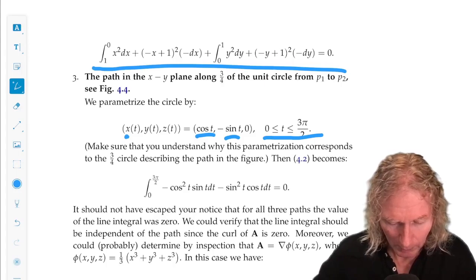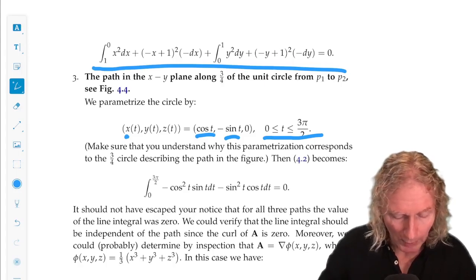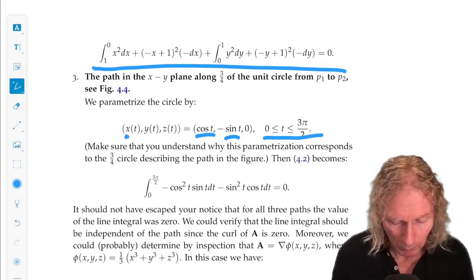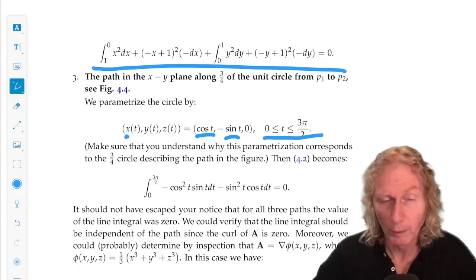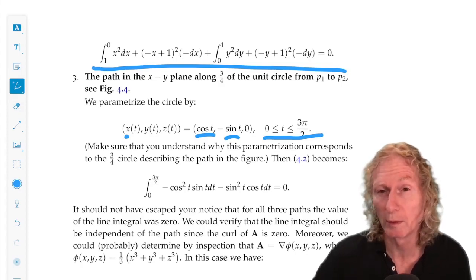From t equals 0 to t equals 3 pi over 2. Now, if you evaluate at t equals 0, what do you get? You get 1, 0, 0, P1. At t equals 3 pi over 2, you get 0, 1, 0, P2.